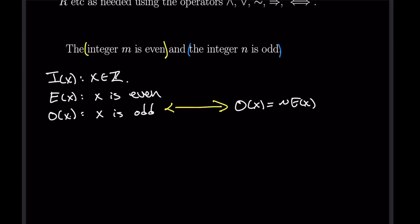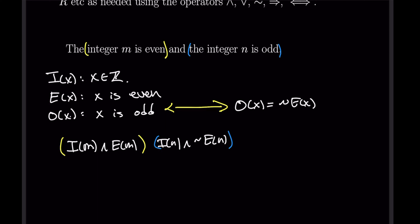Now let's rewrite the full statement symbolically. 'The integer m is even' becomes I(m) ∧ E(m), meaning 'm is an integer AND m is even.' For the blue part, 'the integer n is odd' becomes I(n) ∧ ¬E(n) — n is an integer and n is not even. Then we link both parts with an AND to get the full symbolic statement.